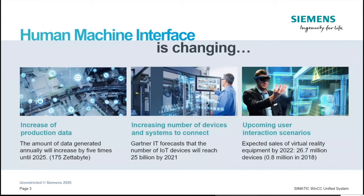Why do we need a new system? The way humans interact with machines continues to change. We see an increase in the production of data, an increase in the number of connected devices on the floor, and these devices generate a lot of data that needs to be monitored and analyzed. User interactions continue to grow in various ways, and we need to consider what HMIs will look like when factories start making use of augmented reality.